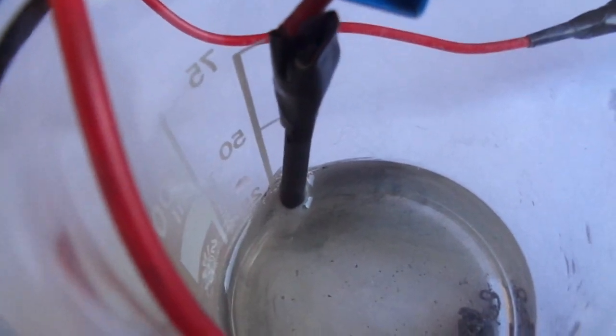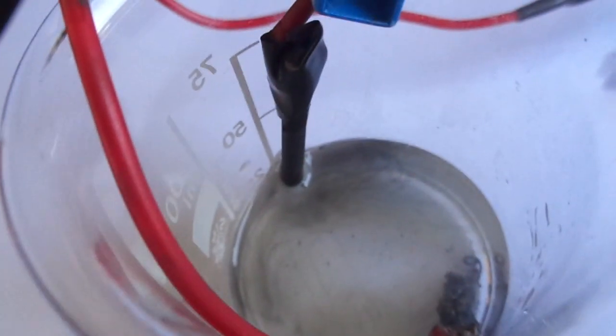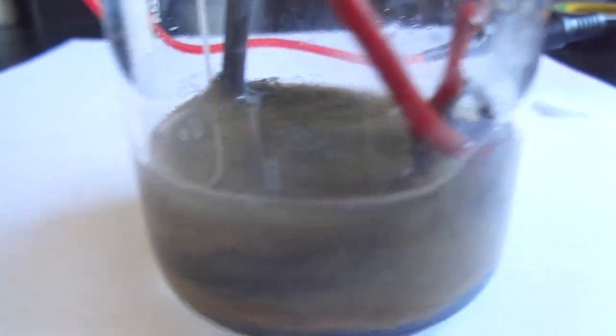You can also see that there is that kind of black solid floating around and that's our silver oxide. Let me stir the solution a bit. Look, there's a lot of that silver oxide.